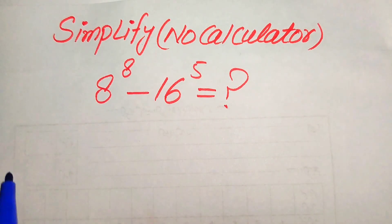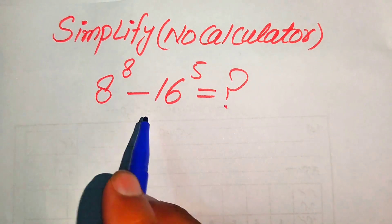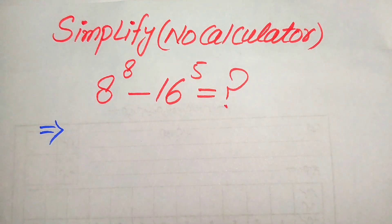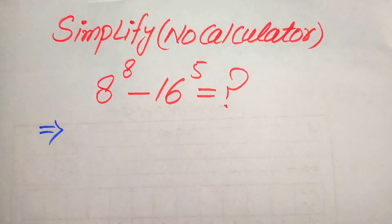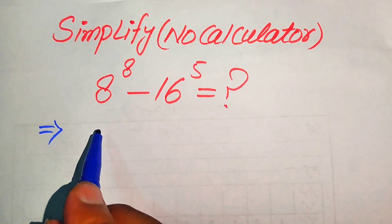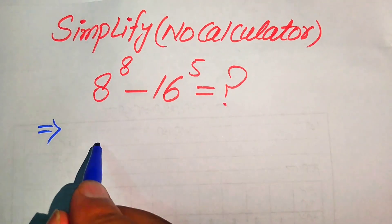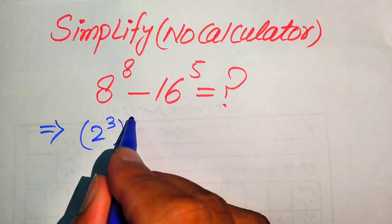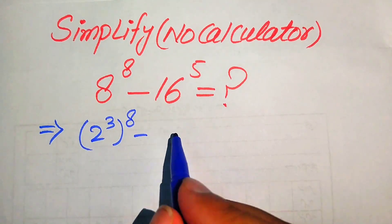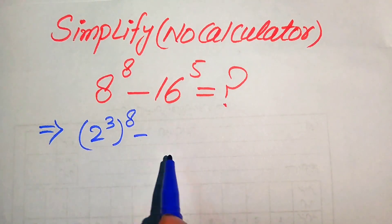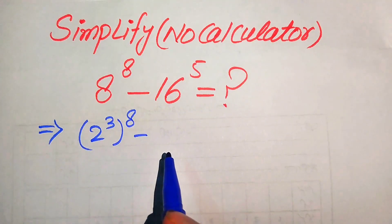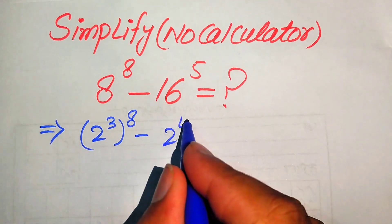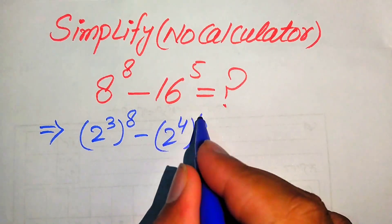Here we need to focus on the bases of these terms and write them in prime factor form. We know that the prime factors of 8 are 2 cubed, and its whole power is 8; minus the prime factors of 16, which equals 2 to the power of 4, and its whole power is 5.